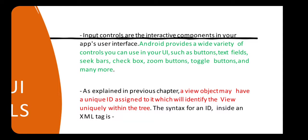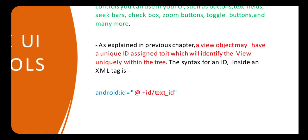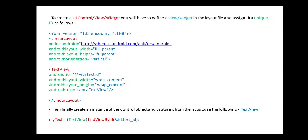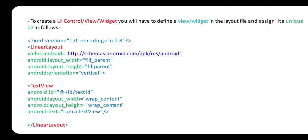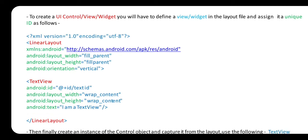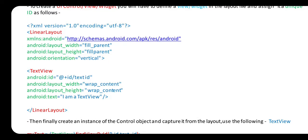The syntax for an ID inside an XML tag is: android:id="@+id/textID". To create a user interface control or view object, you will have to define the view in the layout file and assign its unique ID. Specify the XML version — that is 1.0.